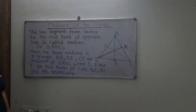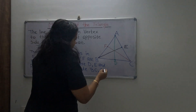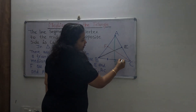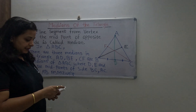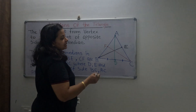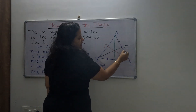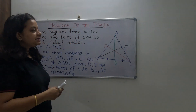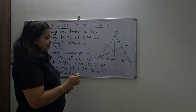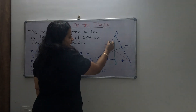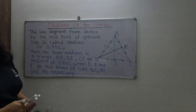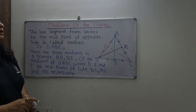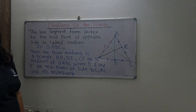BD equals DC because D is the midpoint of BC. Similarly, AE equals EC because E is the midpoint of AC. And AF equals FB because F is the midpoint of AB.